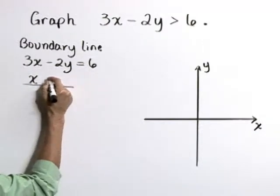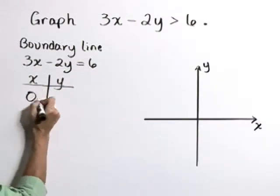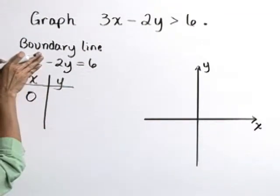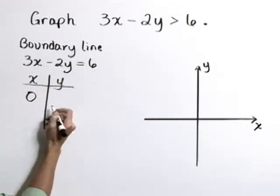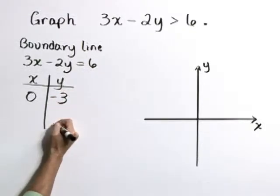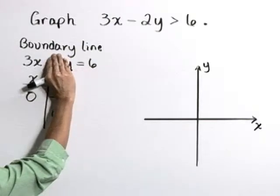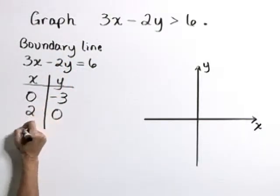I'm going to use a t-table to find intercepts. In this equation, if x is equal to 0, then negative 2y is 6, or y is equal to negative 3. In this equation, if y equals 0, then 3x is 6, or x is equal to 2.